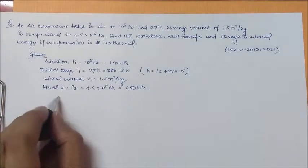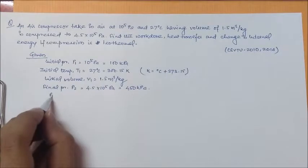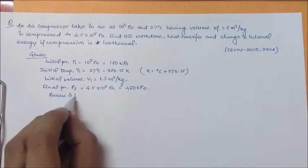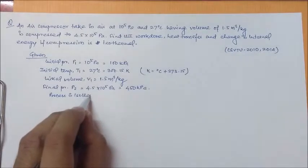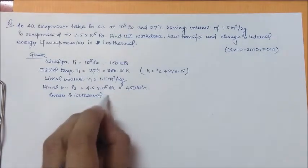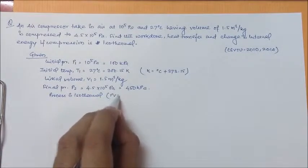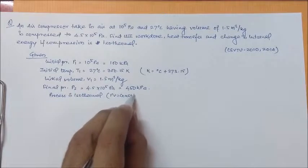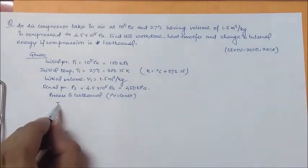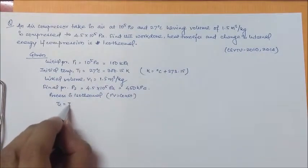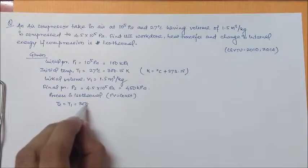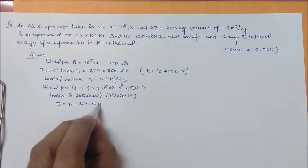Also, it says that process is isothermal, that means PV is constant. Also, that means T2 is equal to T1 that is equal to 300.15 Kelvin.